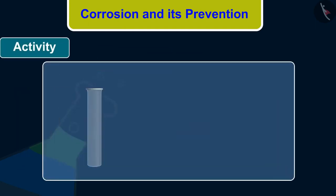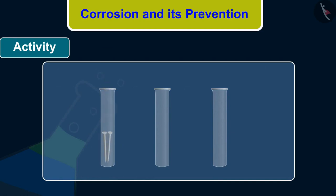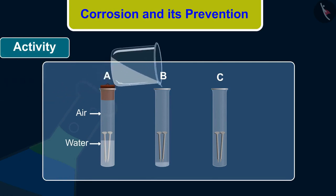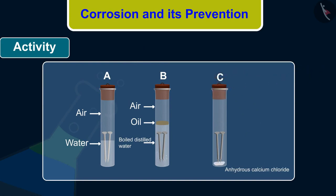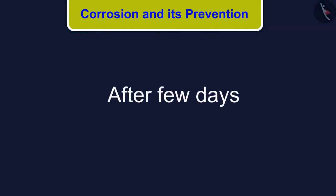Take three test tubes and place clean iron nails in each of them. Label these test tubes A, B, and C. Pour some water in test tube A and cork it. Pour boiled distilled water in test tube B, add about 1 ml of oil and cork it — the oil will float on water and prevent air from dissolving in the water. Put some anhydrous calcium chloride in test tube C and cork it; anhydrous calcium chloride will absorb any moisture from the air. Leave these test tubes for a few days and then observe.